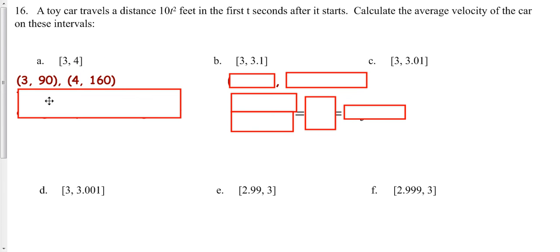So now we just do our slope. Change in y over change in x. So you can do the 160 minus the 90 divided by the 4 minus the 3.